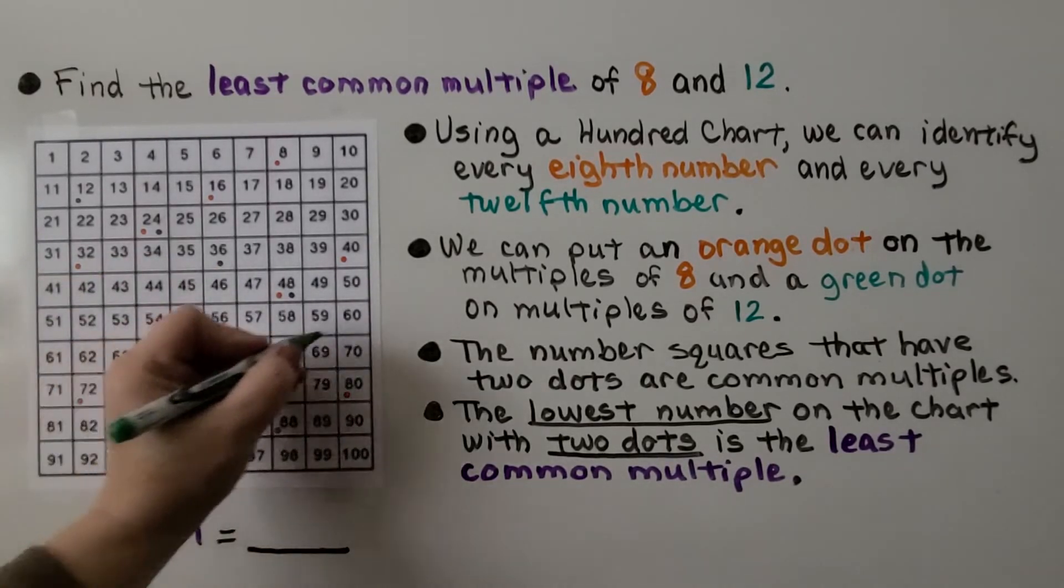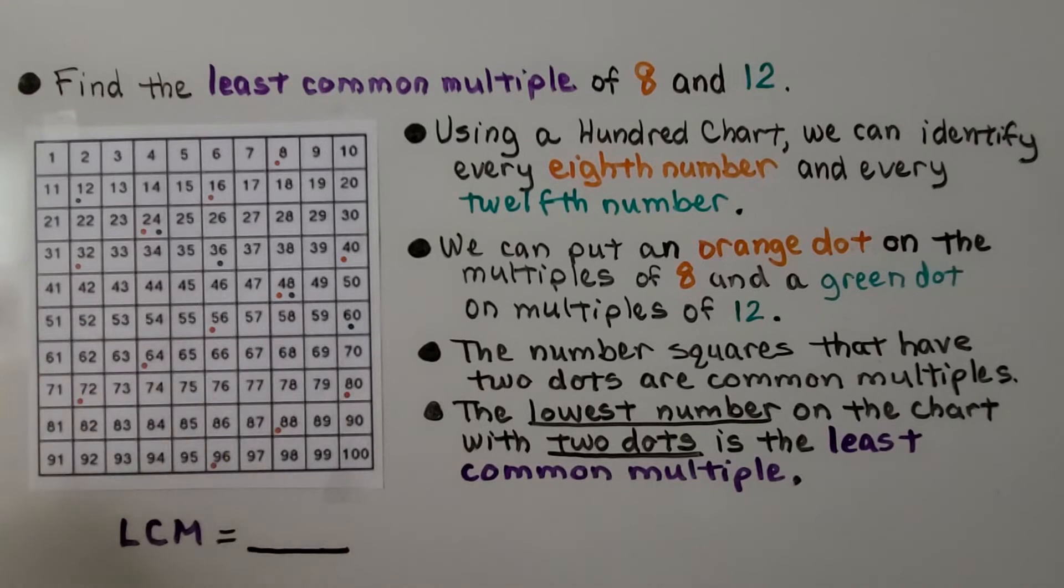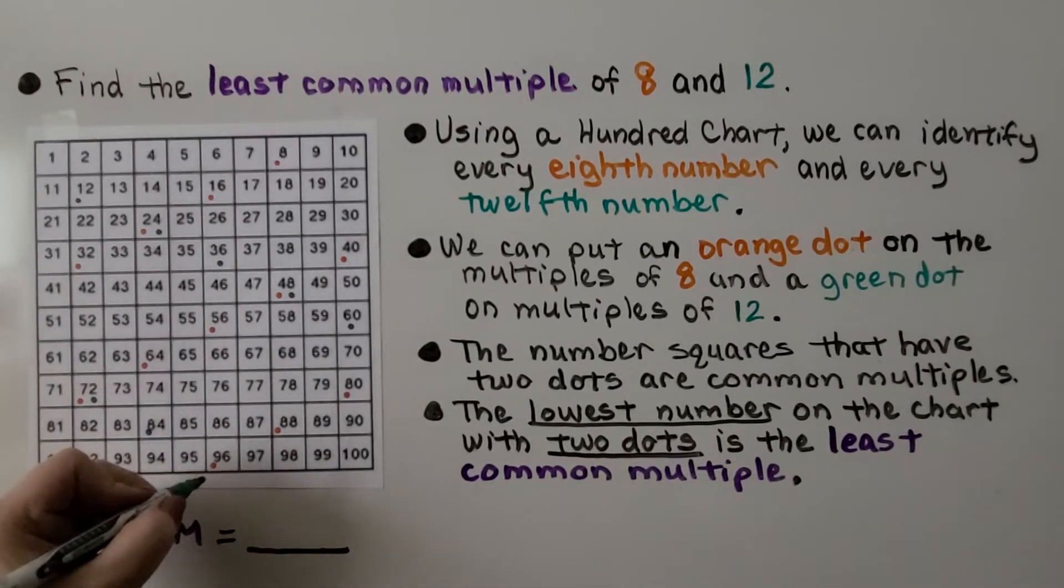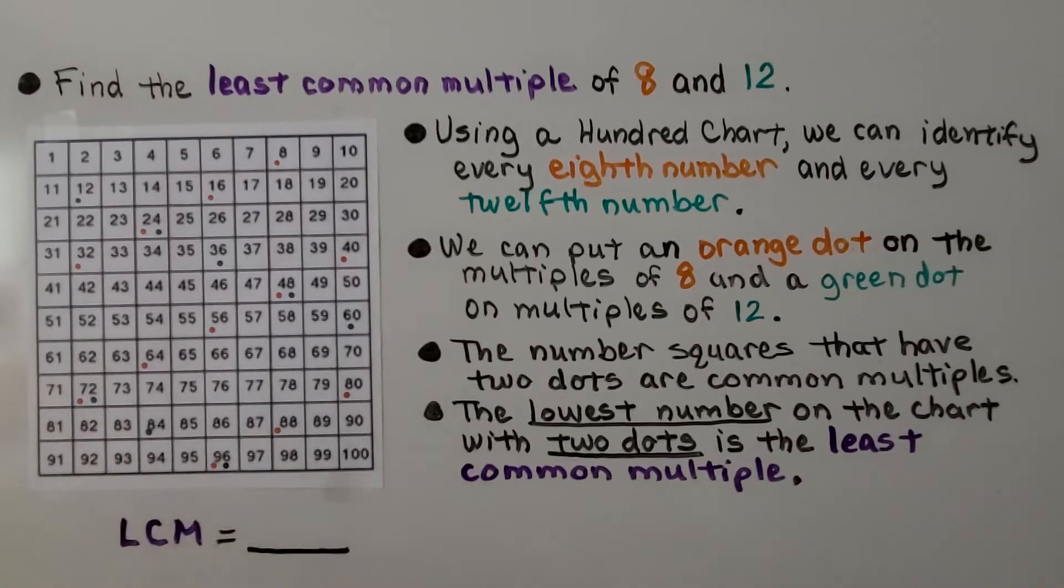12 times 5, which is 60. 12 times 6, which is 72. 12 times 7, which is 84. And 12 times 8, which is 96. And our chart doesn't go any further so we can't go any further with the 12s.